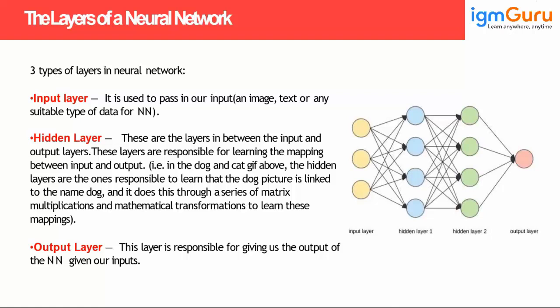So typically we have three parts: one is the input layer, then hidden layers — there will be one single input layer, hidden layers can be one or multiple, and then we will have a single output layer.